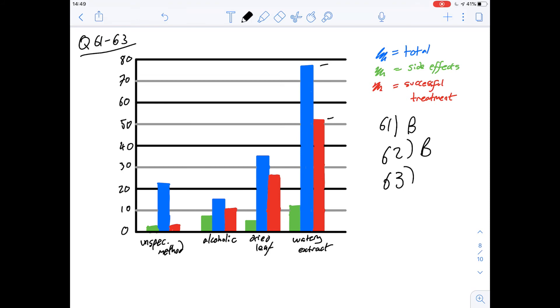So because the number of people with side effects was less than the number of people that were treated successfully then we could say that everyone who had side effects was treated successfully and therefore the number of people with side effects who were not treated successfully is going to be zero and that answer is A.